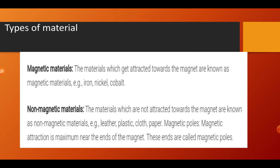Types of material according to the properties of magnetism: there are two types. Magnetic materials are those which get attracted towards the magnet — metals like iron, nickel, and cobalt. Non-magnetic materials are those which are not attracted towards the magnet when it is kept closer to them, such as leather, plastic, cloth, paper, and certain metals like copper. They are not attracted by the magnet.